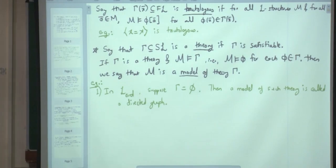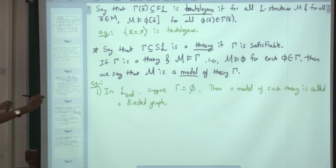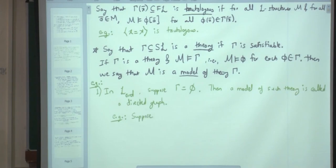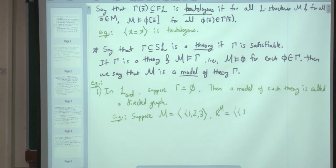If gamma is the set of three sentences expressing reflexivity, transitivity, and symmetry, then a model of gamma is a set with an equivalence relation. This is gamma_EqRel, the theory of equivalence relations. If gamma expresses irreflexivity and symmetry, then a model is a simple graph G = (V, E). Group theory is the collection of three sentences expressing associativity, identity, and inverse — a group is a model of the theory of groups.